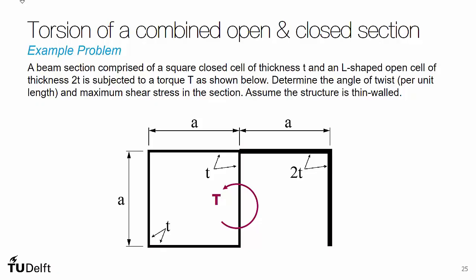In this example we are going to look at the torsion of a combined open and closed section. We are looking at a beam cross section where we have a thin walled square closed section of thickness t and width and height a, connected to an open L-section that has a width and height of a and thickness of 2t. The question asks us to determine the angle of twist per unit length and maximum shear stress for an applied torque t.